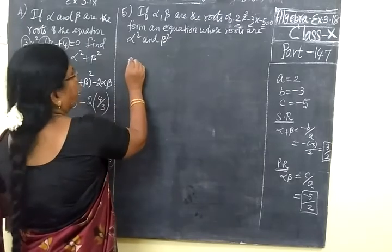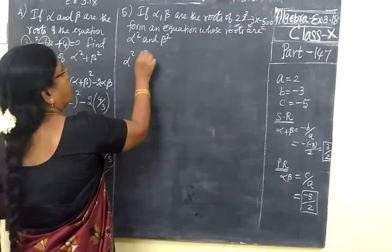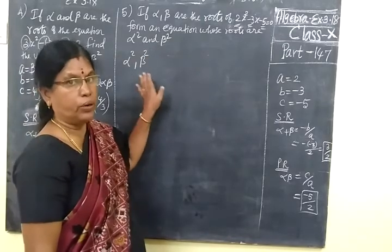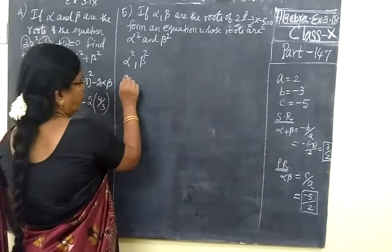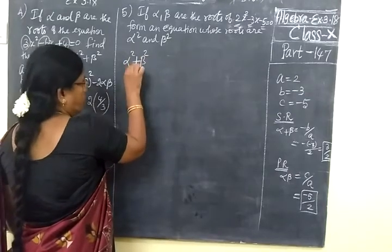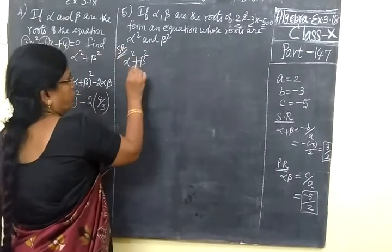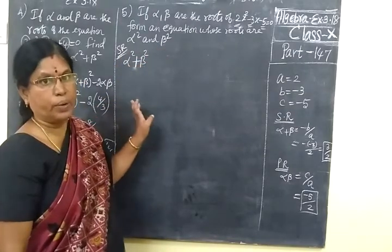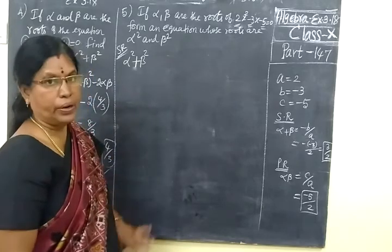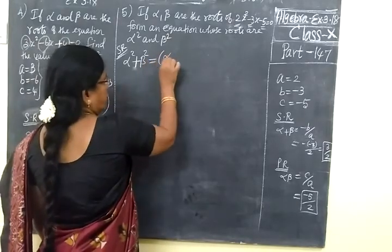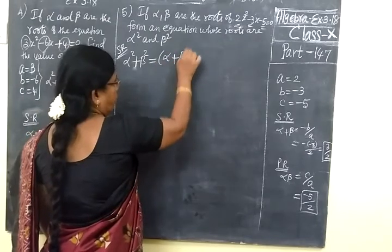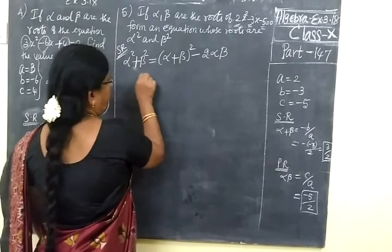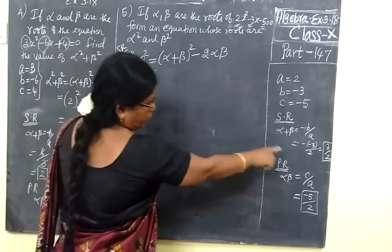So you are taking alpha square plus beta square. Now, how to form a quadratic equation from the roots? Sum of the roots. So sum of the root, SR equal to sum of the root. In the new equation, find the sum and find the product. That is the required equation. So alpha square plus beta square, we know the formula alpha plus beta whole square minus 2 alpha beta. So alpha plus beta is 3 by 2.